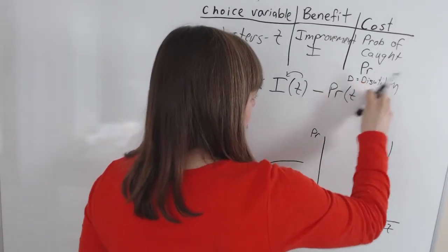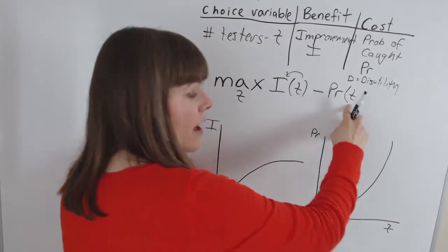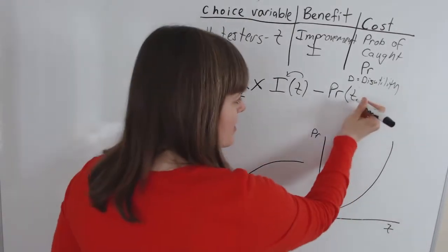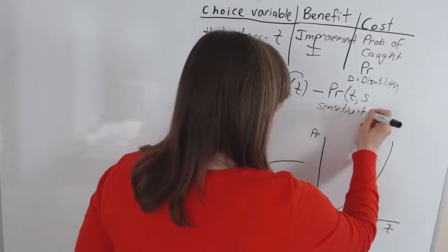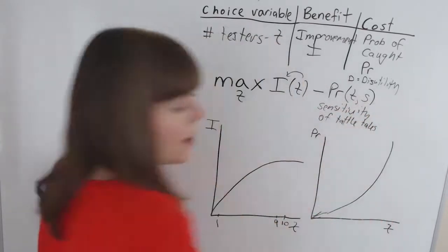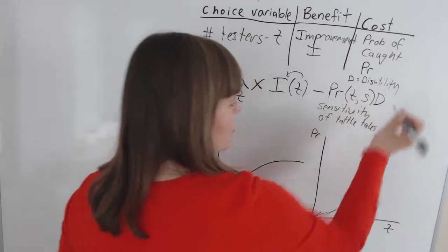Let's redo the probability of getting caught function so that it not only depends on how many people we test, it also depends on the sensitivity of the tattletales. If we still multiply that by the disutility if we're caught.